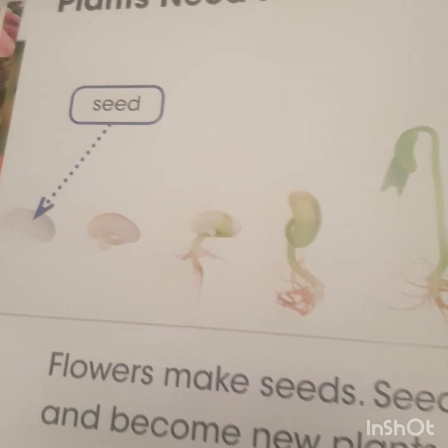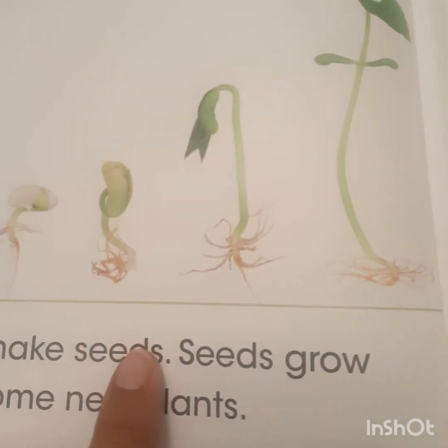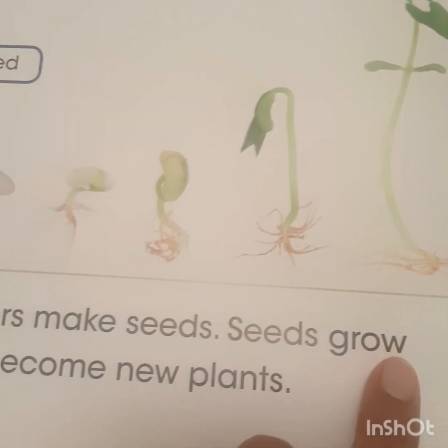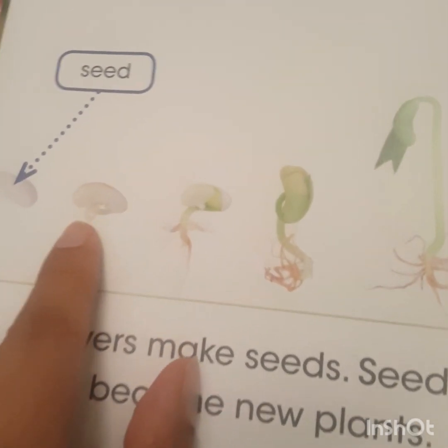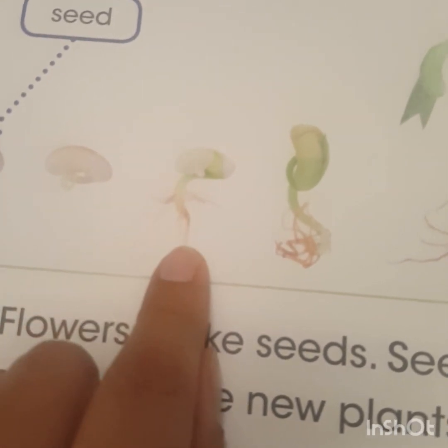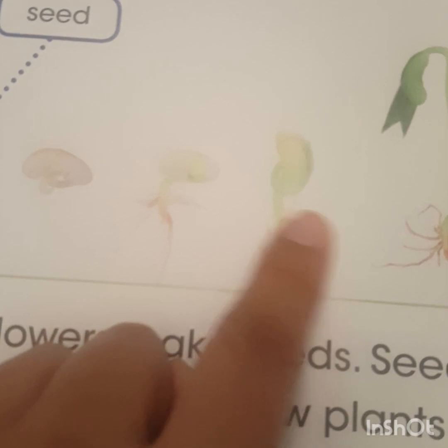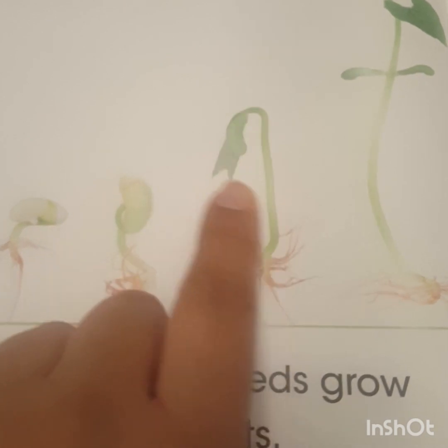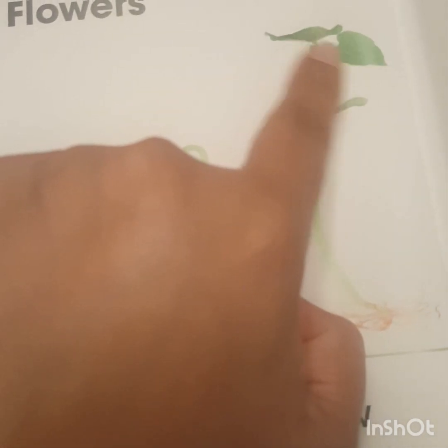Plants need flowers. Flowers make seeds. Seeds grow and become new plants. If we take a look at this seed here, you can see that it's starting to sprout some roots. And then the stem is coming out — it's emerging — and you can see some leaves as well.